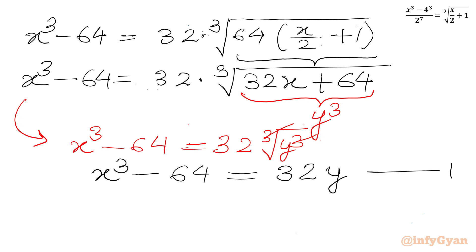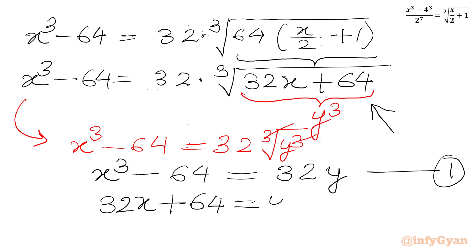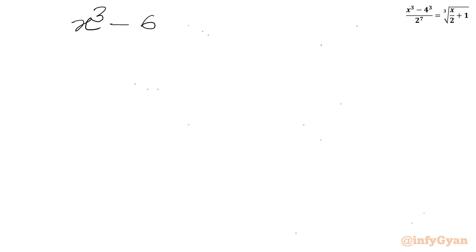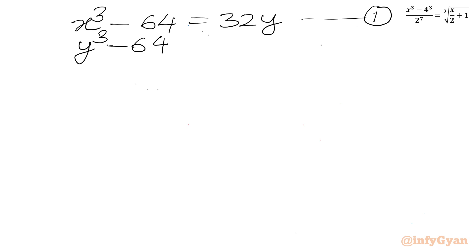This is our equation number 1. Now from this substitution itself, we can write 32x plus 64 equal to y cubed, or equivalently y cubed minus 64 equal to 32x. This would be our equation number 2. So to summarize: equation 1 is x cubed minus 64 equal to 32y, and equation 2 is y cubed minus 64 equal to 32x.